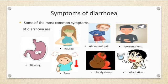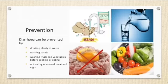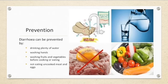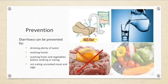Students, diarrhea can be fatal in case of severe dehydration. Therefore, drink plenty of water; otherwise dehydration may take place. Doctors prescribe antibiotics to treat diarrhea. We can prevent diarrhea by following these tips: always wash your hands with soap after using the toilet, wash all fruits and vegetables before cooking or eating, and don't eat uncooked meat and eggs.